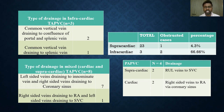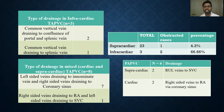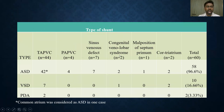Among the obstructed cases of TAPVC, we had 3 obstructed cases, out of which 1 patient was of supracardiac type and 2 patients were of infracardiac type. Among 23 total supracardiac cases, only 1 was obstructed, constituting 4.3% of cases. Among the 3 patients of infracardiac TAPVC, 2 were obstructed, constituting 66.6% of infracardiac TAPVC cases. ASD was the most common shunt, seen in 96% of cases, followed by VSD seen in 16% of cases, and PDA was the least common shunt, seen in 3.3% of cases.